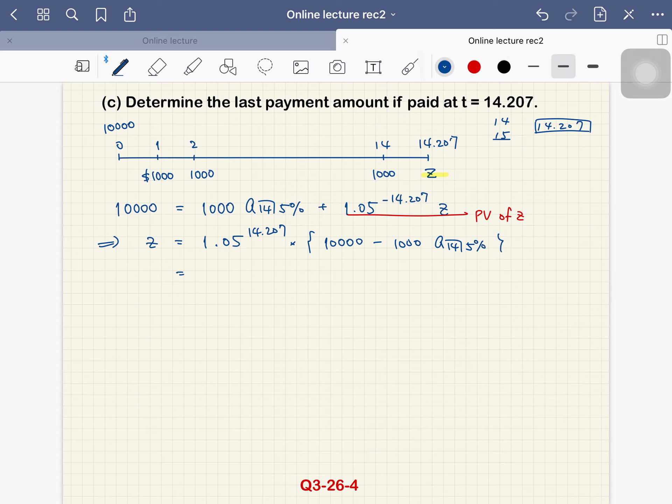If we use BA2 plus, you can immediately get this amount, and this equals 200.68. So this becomes $202.72.